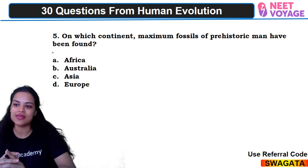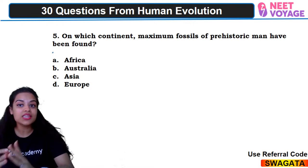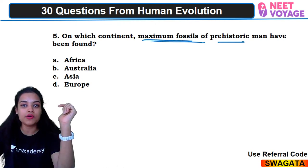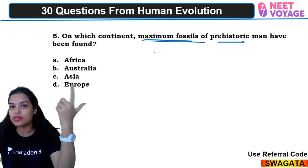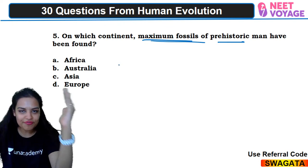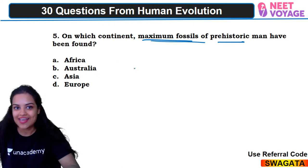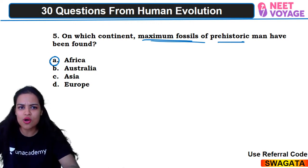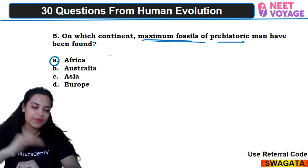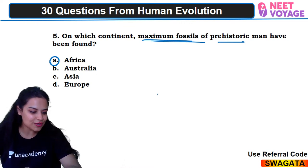Fifth question: on which continent maximum fossils of prehistoric man have been found? We all know Africa — Africa is the actual place of paleontology. In Africa you find most of the fossils. So it would be A. Samyat and Ram Prasad have answered correctly — fifth's answer is A.